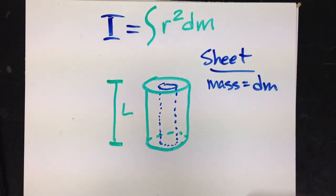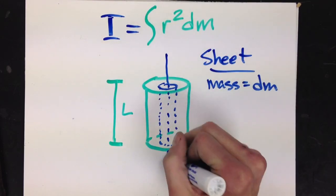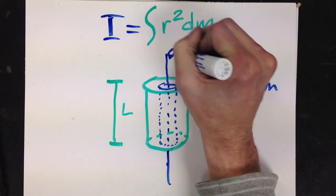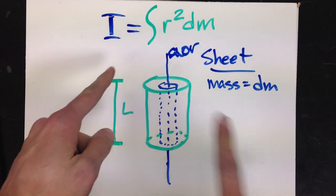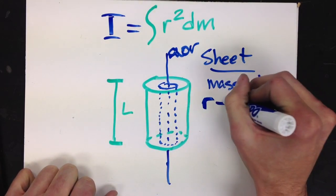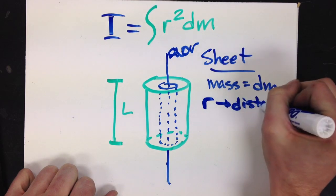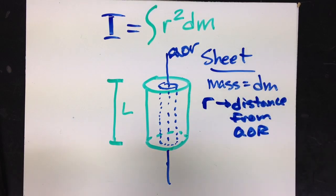Now, let's say that it is out from my axis of rotation, or AOR. Let's say that the sheet itself is out a distance, little r. So r is the distance from axis of rotation.